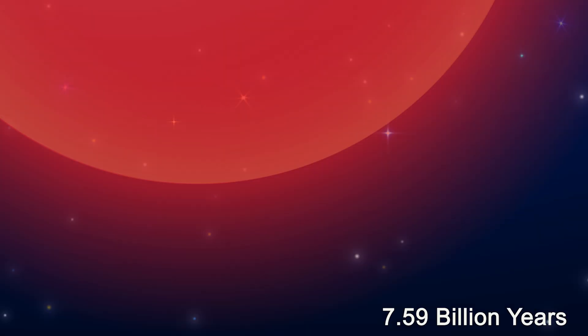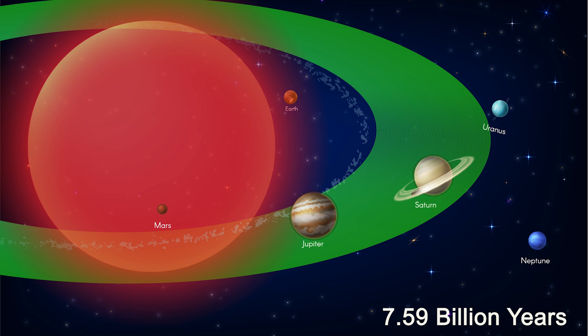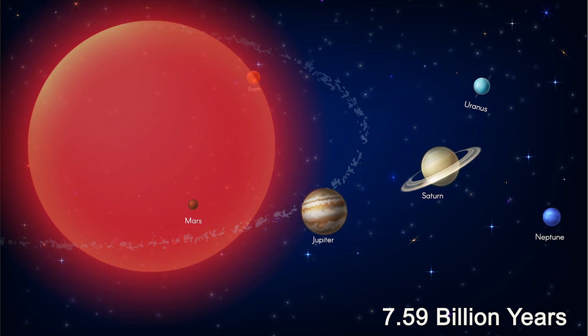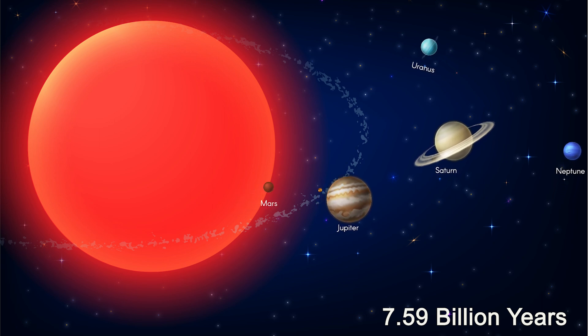At 7.59 billion years, the sun reaches its maximum size as a red giant, having lost 33% of its mass. At this point, the outer gas giants will now be in the habitable zone. These planets will be less affected by the sun's transformation, but the increased solar radiation will alter their atmospheres.